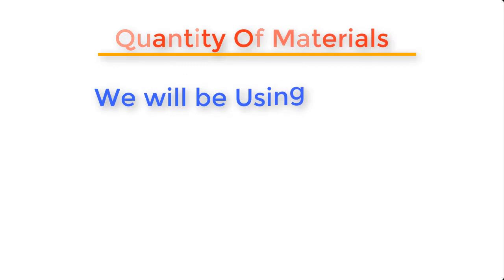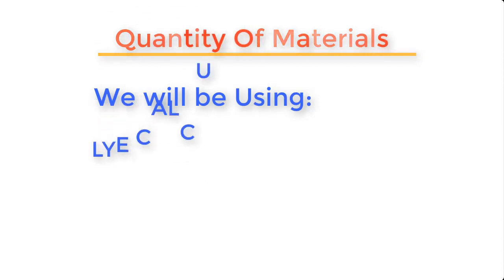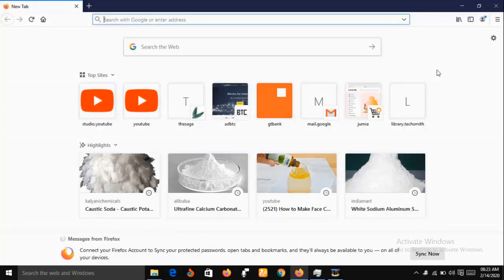Now we will find out the quantity of materials we are going to use for our production. In this preparation we are going to use 900 ml by volume, which is about 830 grams by weight, of palm kernel oil. We are going to use the lye calculator to determine the amount of caustic potash and the volume of water required to dissolve the caustic potash. We'll be using 830 grams of palm kernel oil, that is about 900 ml, and the lye calculator will tell us the quantity of caustic potash required.